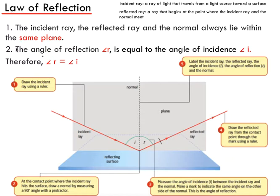The law of reflection has two parts. The first is that the incident ray, the reflected ray, and the normal always lie within the same plane. So if you picture this incident ray, this reflected ray, and this normal, they all exist in the same three-dimensional plane. It's hard to visualize two-dimensionally, but this gray rectangle here is considered the plane — it's perpendicular to the reflecting surface. So once this incident ray hits this area, it doesn't come out of the page; it continues in that plane.